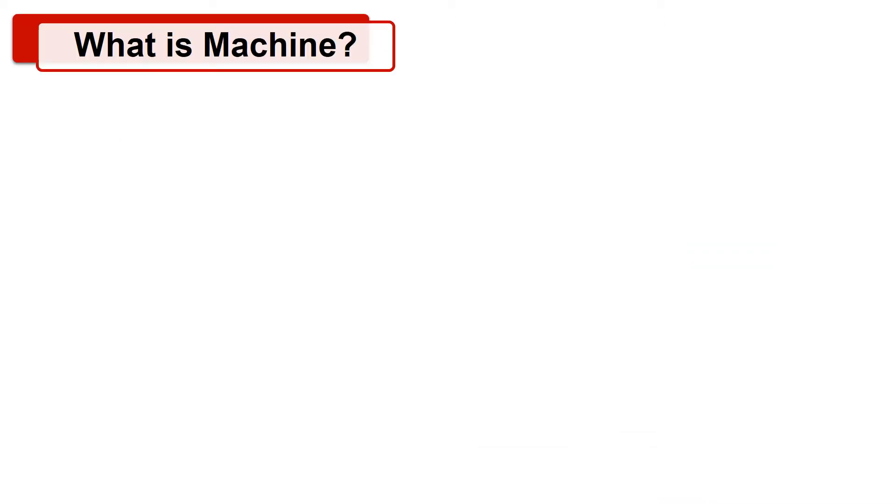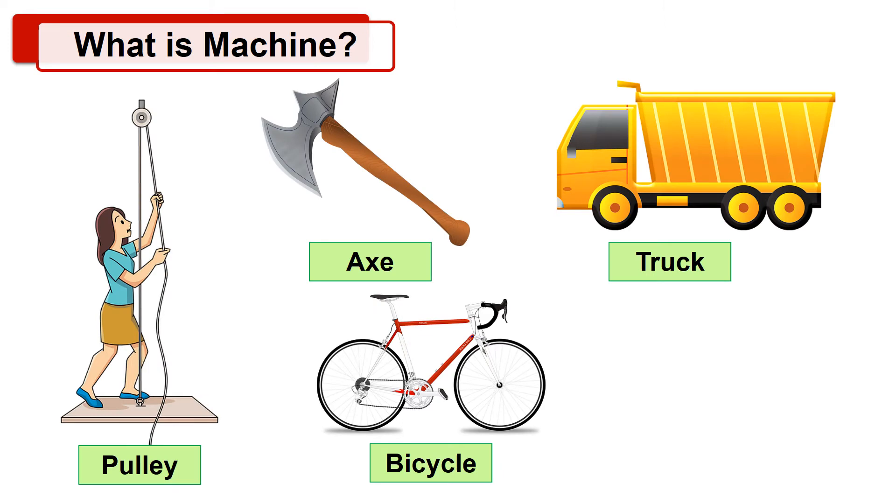Before all else, let's see what is machine. In the pictures, certain devices are shown which we use in our day-to-day life. Do these devices help us to perform any kind of work? Yes, using all these devices, we can perform our work in less time and less effort. So these devices are called as machines.